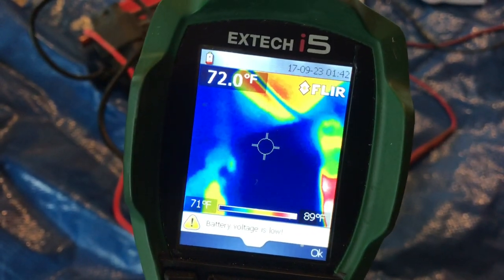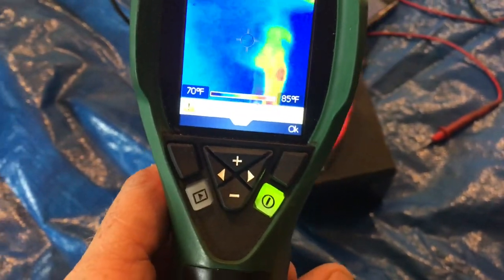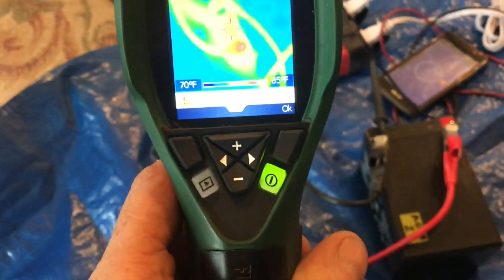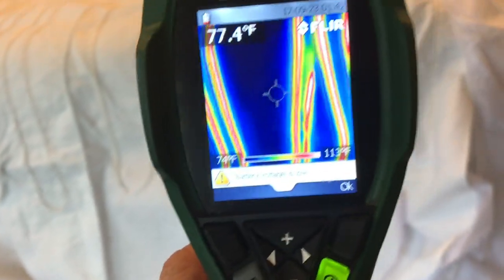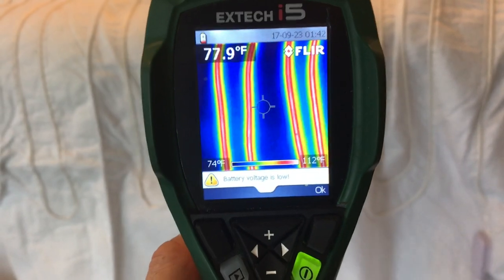So I'm just using the thermal camera to check to make sure that nothing's overheating. When I pass this camera over the cell phone you'll see it's bright red. It's not overheating, it's just reflecting heat back. On the screen I see a few flashes of 110 degrees.